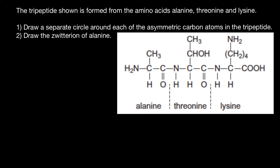So what we call an asymmetric carbon atom — this is such a carbon atom which is connected to four different groups, or four atoms which are different. For example, let's consider alanine and this carbon atom here.